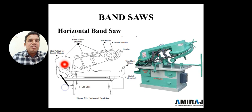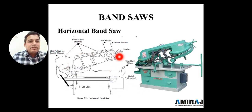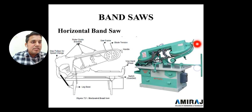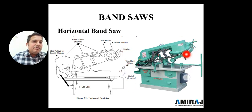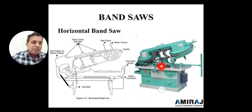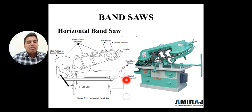The horizontal band saw has a step-pulley type speed changer at the back. Rolling rollers are there, and a frame-blade slide tension — you can adjust the tension using this provision. There is a handle for up-and-down purpose, a vice for holding the workpiece, a stroke gauge or switch gauge, and a leg base. It is a fully automatic horizontal band saw with high capacity for the metal removal process.